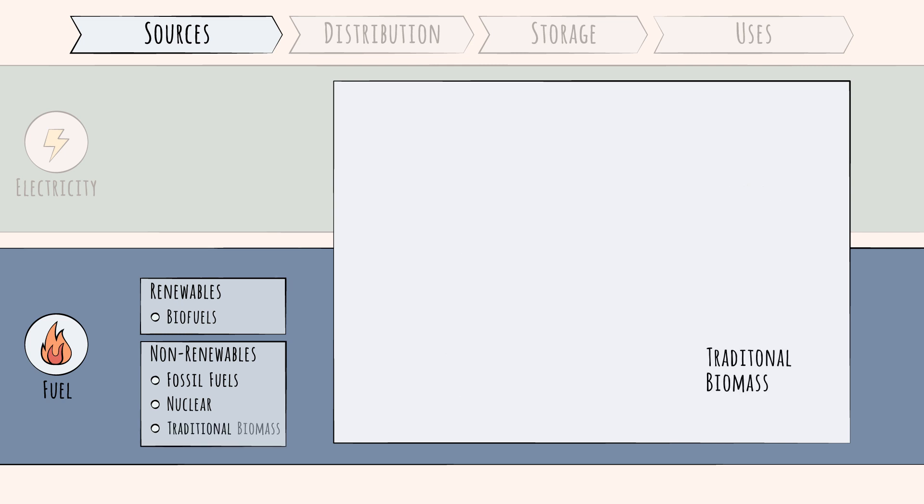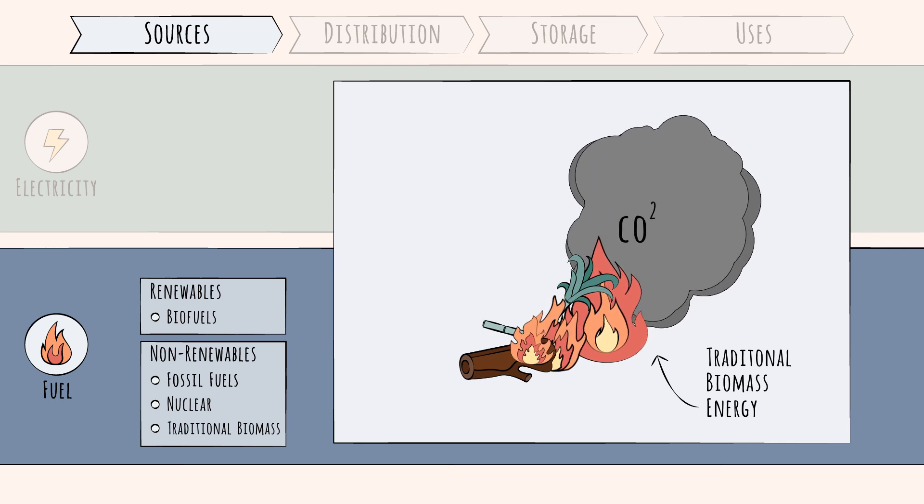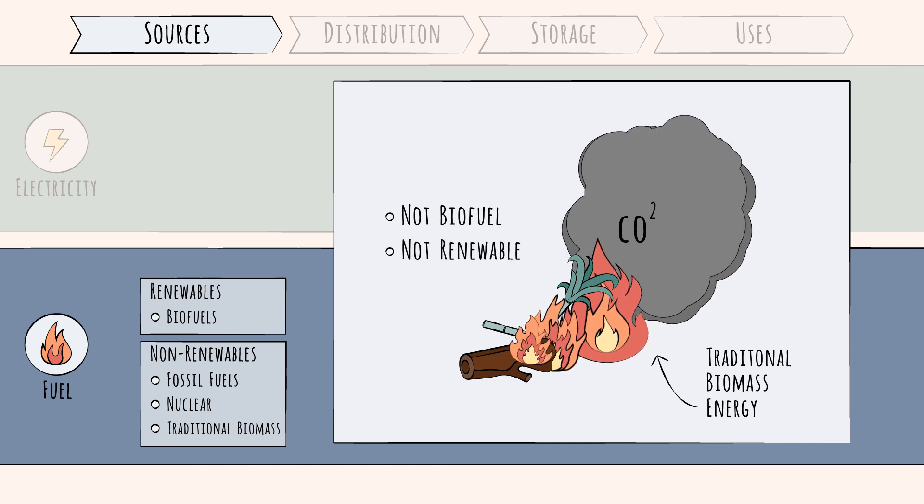You may also hear the term traditional biomass energy. This refers to the burning of crop residues, wood, and other organic matter for heat. This is not the same as biofuel and is not considered a renewable resource, but this is still a sizable slice of total energy, roughly six percent.